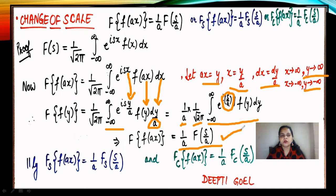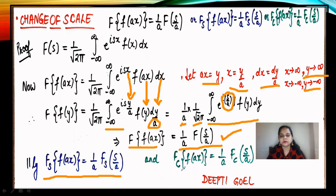The same change of scale property is also applied on the Fourier cosine and Fourier sine transforms. The Fourier sine transform of f(ax) is (1/a)·Fₛ(s/a), and similarly for the Fourier cosine transform: Fꜭ[f(ax)] = (1/a)·Fꜭ(s/a). This is the change of scale property.